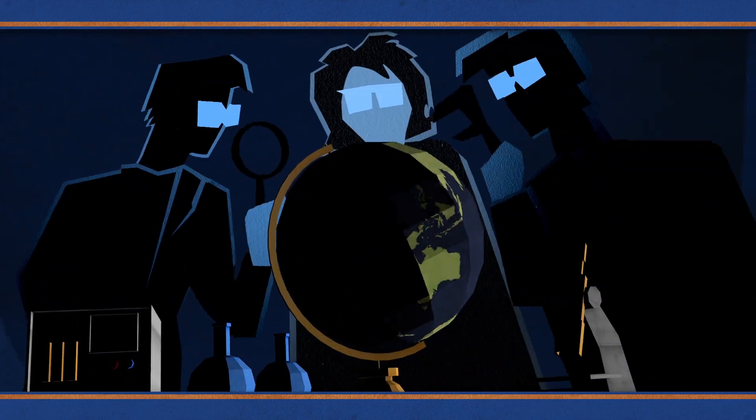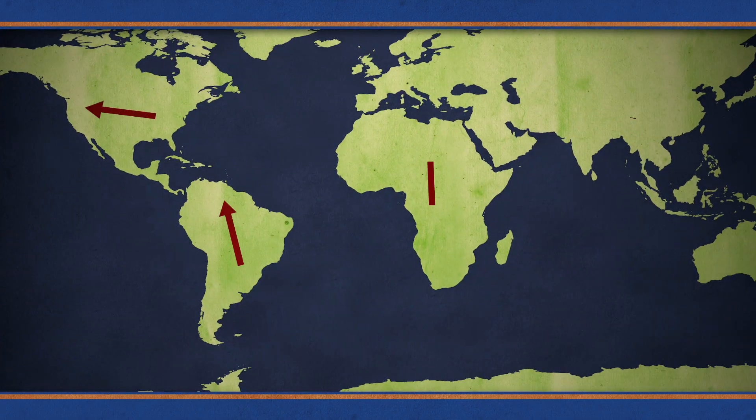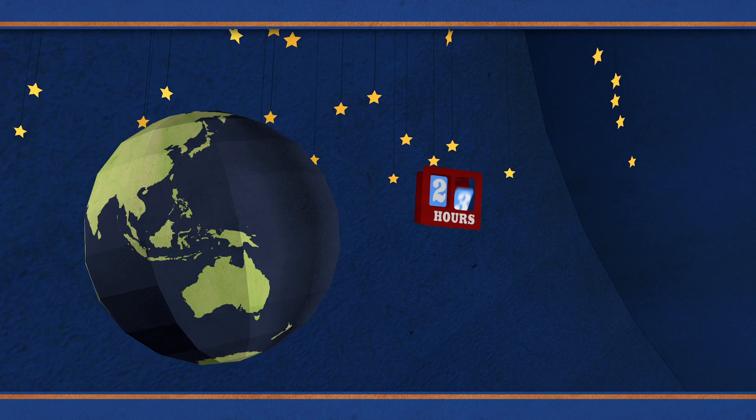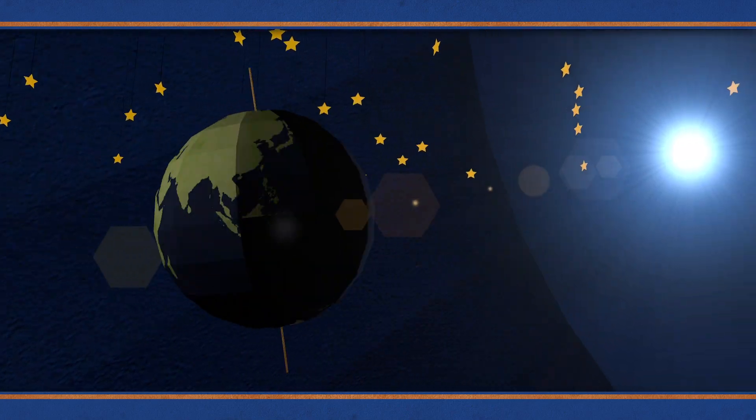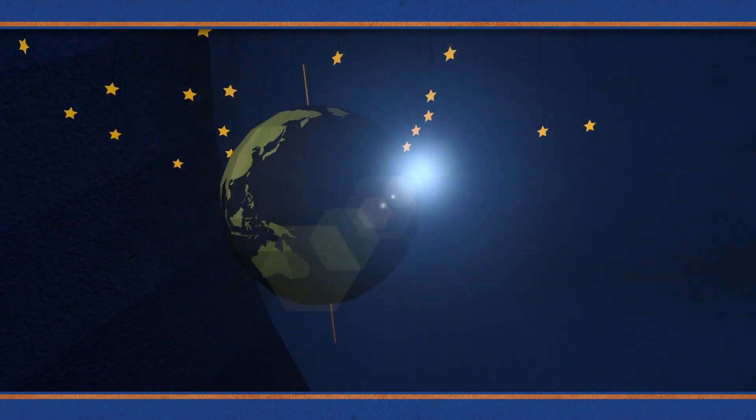But scientists who like to find out exactly what's going on know the ground actually moves around quite a bit. Days are never quite 24 hours, and the Earth actually wobbles on its axis in a very particular way as it revolves around the Sun.